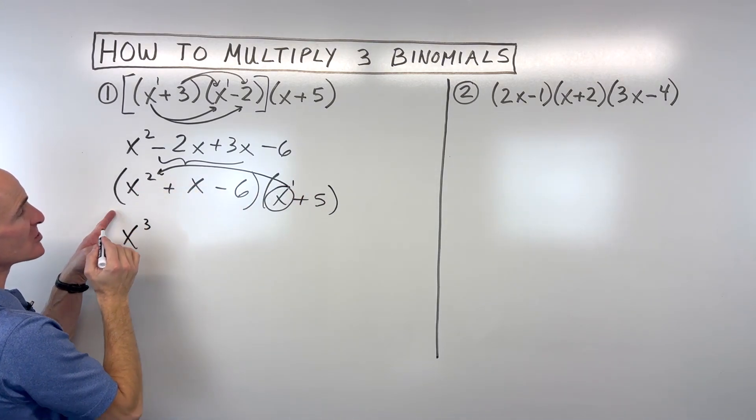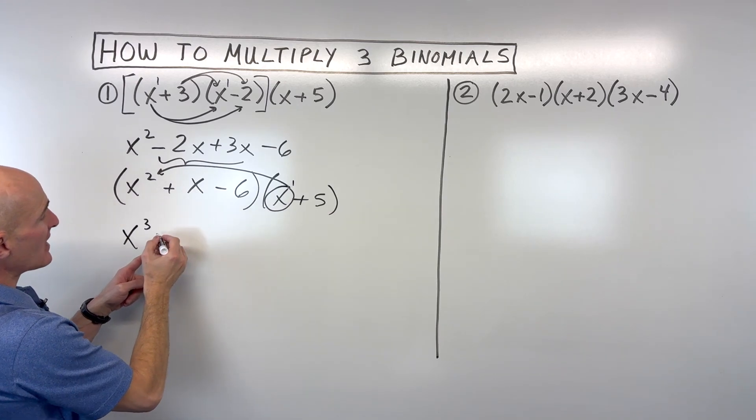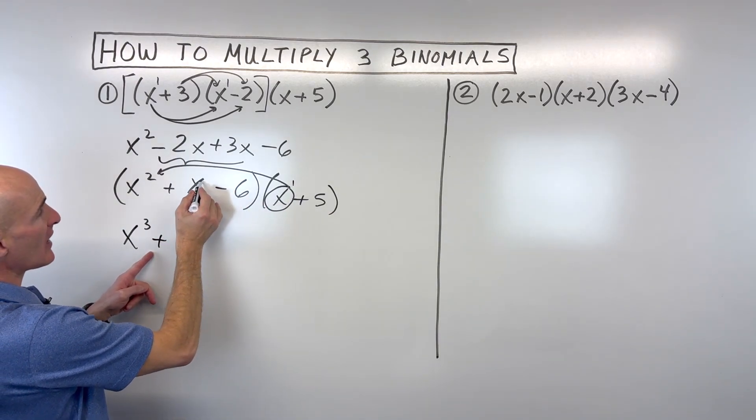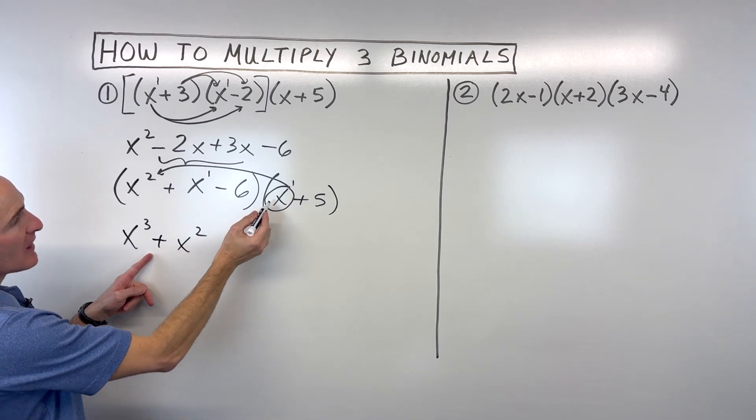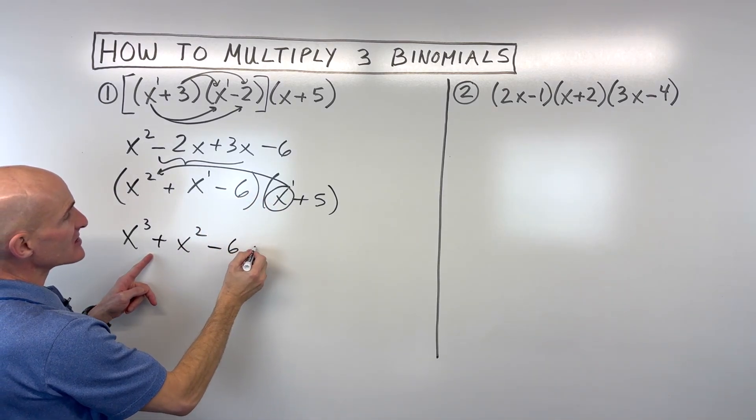Remember, you're adding the exponents. 1 plus 2 is 3. Then x times x gives us x squared, because again, we're adding the exponents. 1 plus 1 is 2, and then x times negative 6 is negative 6x.